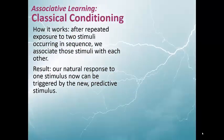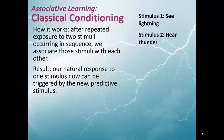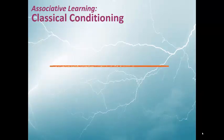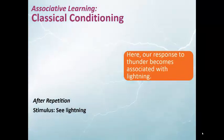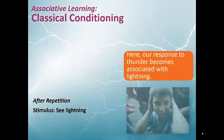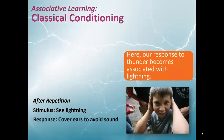Associative learning is classical conditioning. After repeated exposure to two stimuli occurring in sequence, we associate those stimuli with each other, and our natural response to one stimulus is now triggered by a new predictive stimulus. For example, when we hear thunder, we now expect to see lightning. Here, our response to thunder becomes associated with lightning. After repetition, the stimulus is we see lightning, and the response is we cover our ears to avoid the sound.